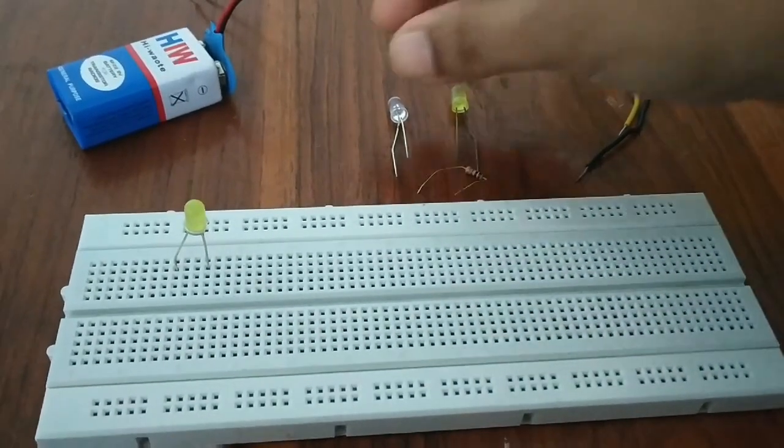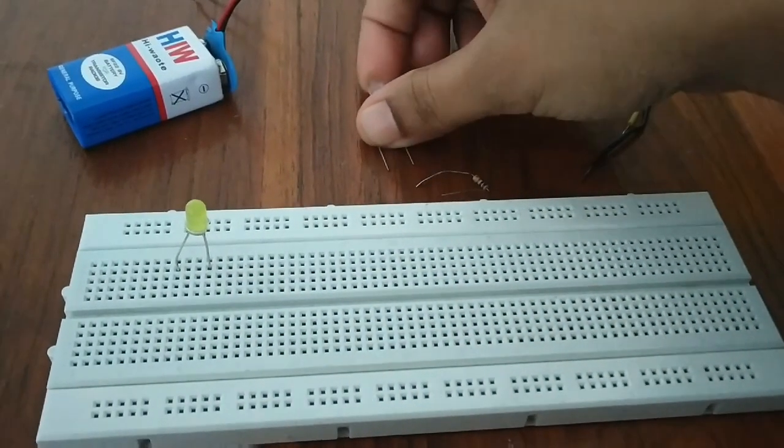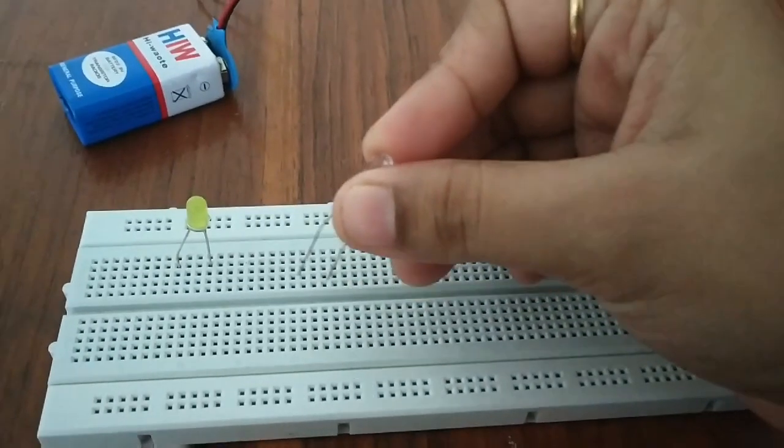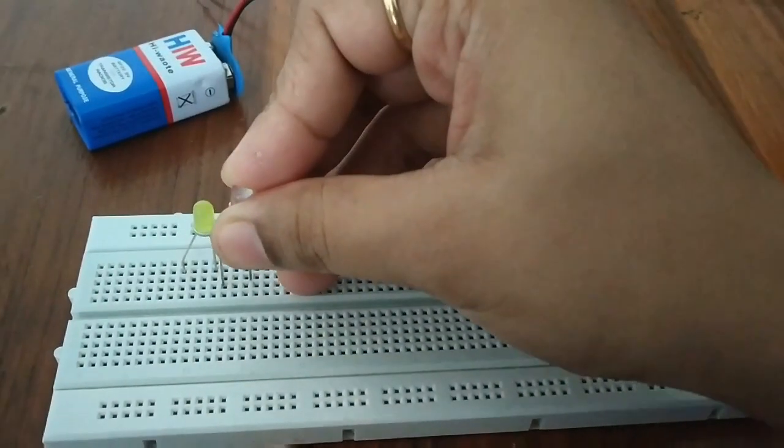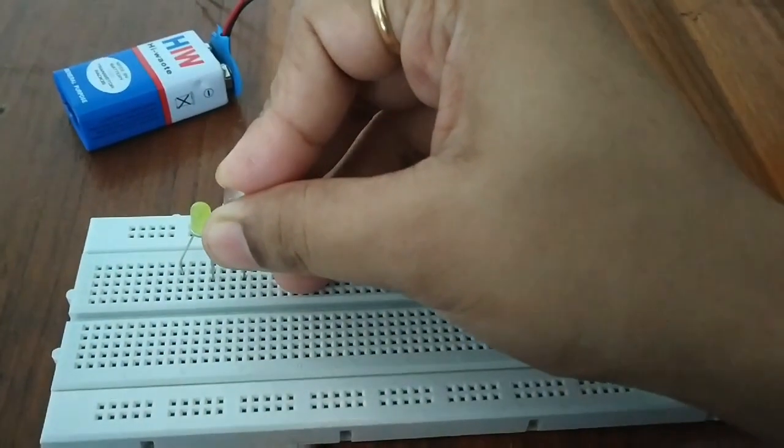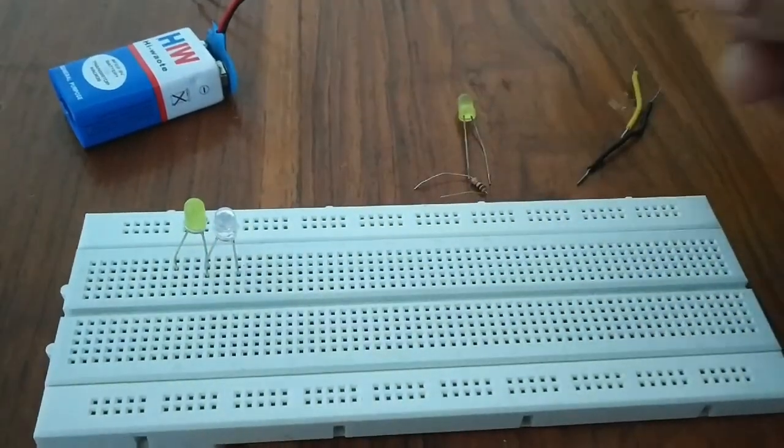Now take another LED. Connect its positive terminal to the negative terminal of the first LED like this.